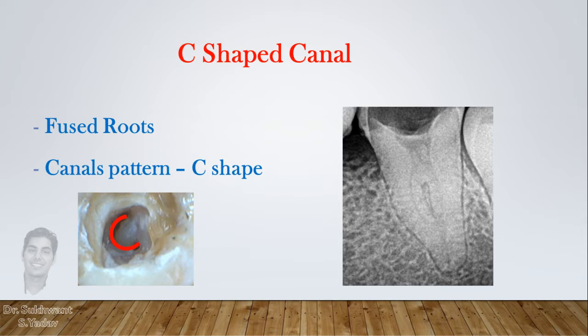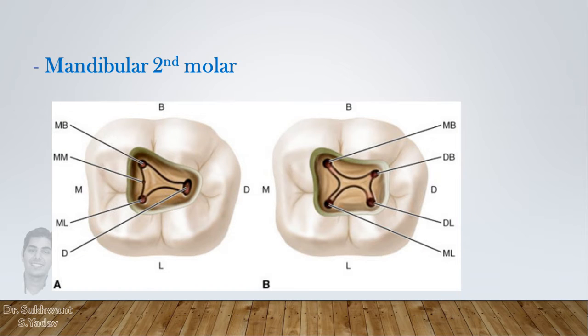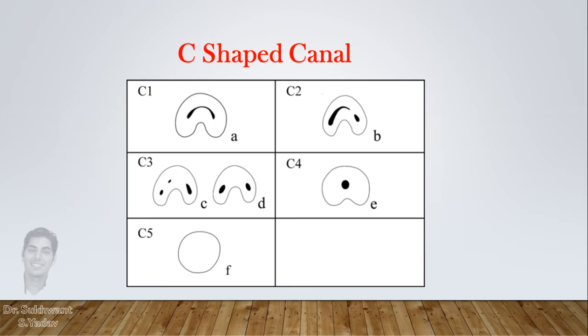C-shaped canals are most commonly found in mandibular second molars. Usually, orifices in second molars are located in either a triangular fashion if there are three canals, or a quadrilateral fashion if there are four canals.